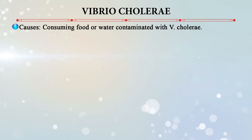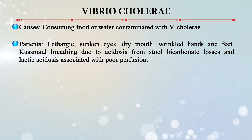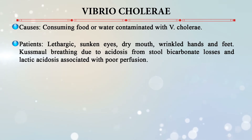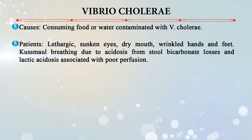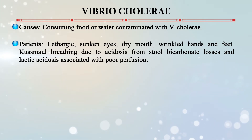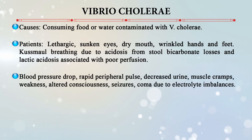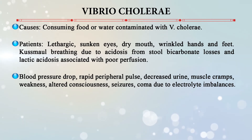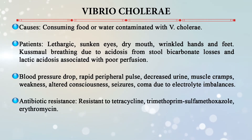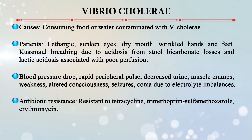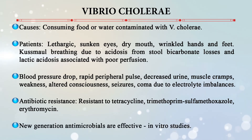Vibrio cholerae causes cholera, an infectious disease causing severe watery diarrhea leading to dehydration and death if left untreated. It is contracted by consuming food or water contaminated with Vibrio cholerae. Patients are normally lethargic with sunken eyes, dry mouth, wrinkled hands and feet, irregular breathing due to acidosis from stool bicarbonate loss and lactic acidosis, blood pressure drop, rapid peripheral pulse, decreased urine output, muscle cramps, weakness, altered consciousness, seizures, and coma due to electrolyte imbalances. It is also becoming antibiotic-resistant to tetracyclines, trimethoprim-sulfamethoxazole, and erythromycin.